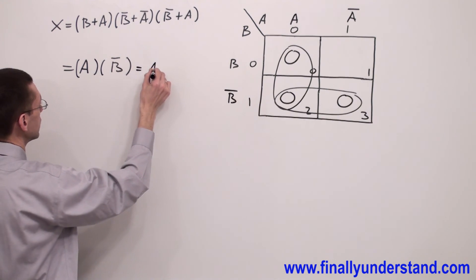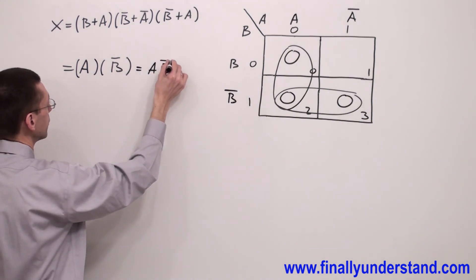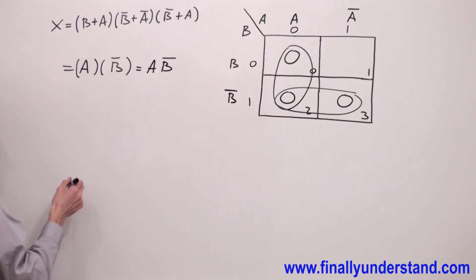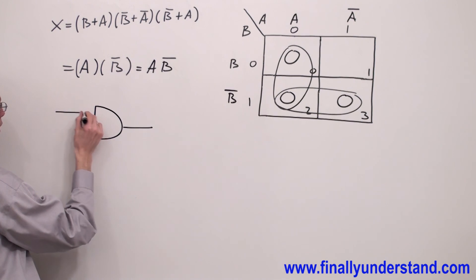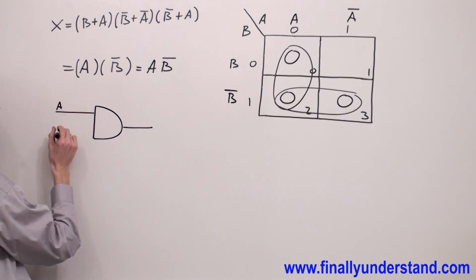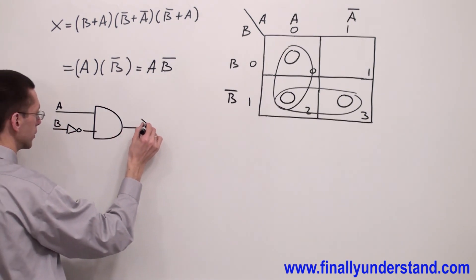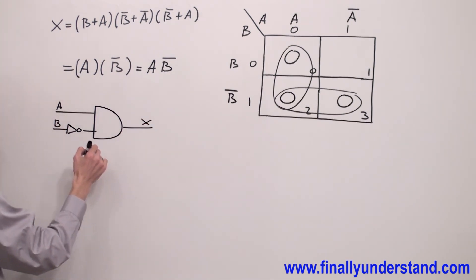And the answer is simply nothing else just A·B̄. If you want to implement it, this is nothing else just an AND gate with input A and inverted input B. And this is the output X. So these are the solutions to my problem.